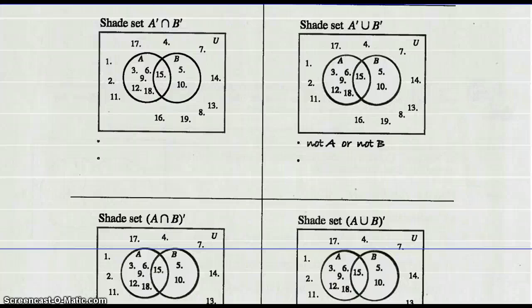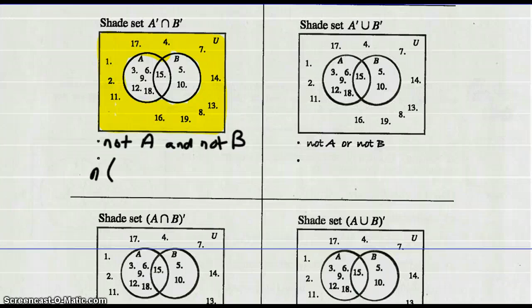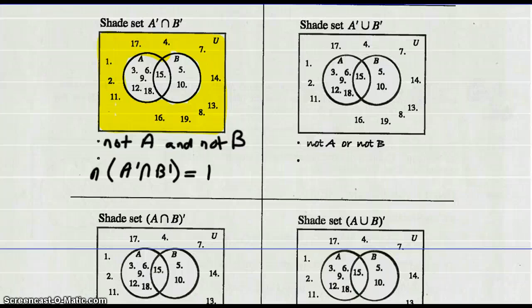Shade the set not A intersect not B. Not A is everything outside circle A, including the stuff that's in B. And then the stuff that's not B can't be circle B. So there is the shaded section for not A intersect not B — not A and not B. How many elements? The shaded section has 11 elements.